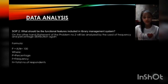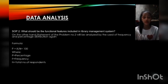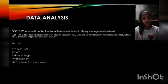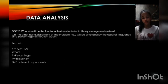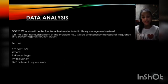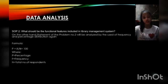Moving to statement of the problem number 2, which is: what should be the functional features included in the library management system? In SOP number 1, we used frequency and percentage distribution as a statistical formula for analyzing data. On the other hand, to analyze statement of the problem number 2, the formula for getting the percentage will be used. The formula is: P equals F over N times 100, where P is percentage, F is frequency, and N is the total number of respondents. Let's go to the next slide to see the table of application data.